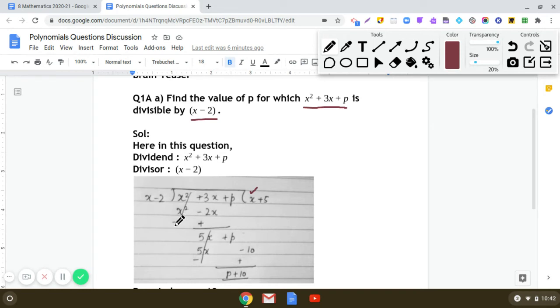x² and x² gets cancelled and 3x + 2x will give us 5x. Now copy down plus p.